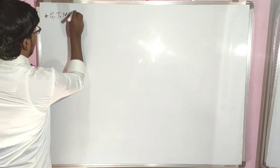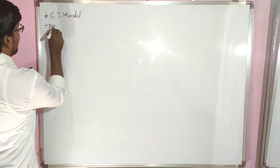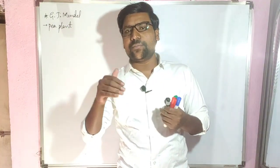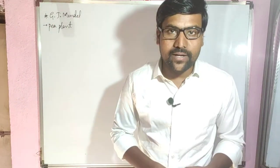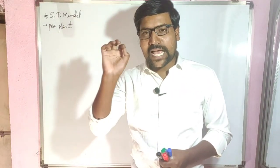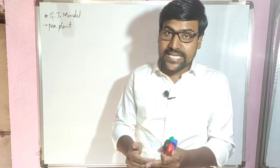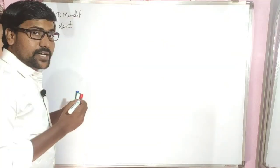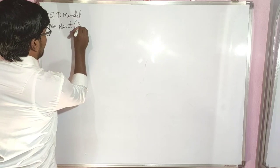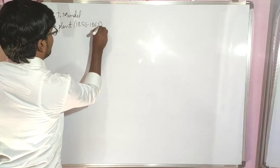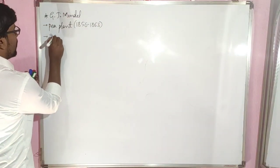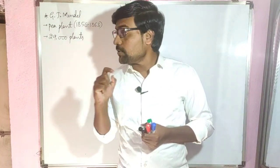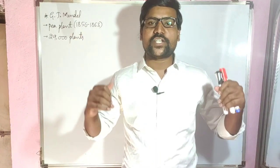Gregor Johann Mendel studied the pea plant for genetic experiments. He did not study genetics as a branch directly — he conducted cross hybridization experiments on the pea plant, and the results of those experiments led to the founding of the genetics branch. He studied pea plants for seven years, from 1856 to 1863, and in those seven years he studied 29,000 plants.